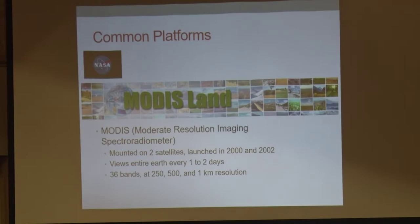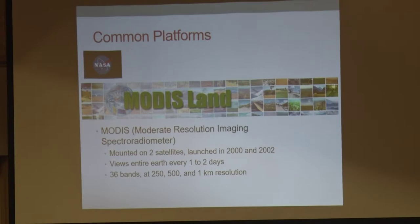We'll start off with MODIS — the Moderate Resolution Imaging Spectroradiometer. This is a sensor platform mounted on two different satellites going in polar orbits. Each one is literally passing over the same spot every day, so you get two images a day from this satellite system. They have different resolutions — from 250 to 500 to one kilometer — and capture different wavelengths at those different resolutions. Fortunately, a lot of the most important things about vegetation are best captured at the highest resolution, so 250-meter resolution is what we're usually looking at.